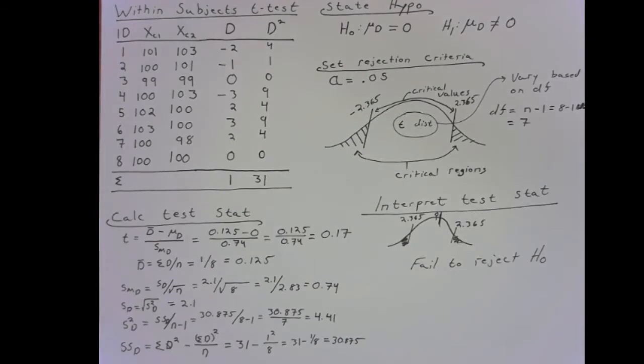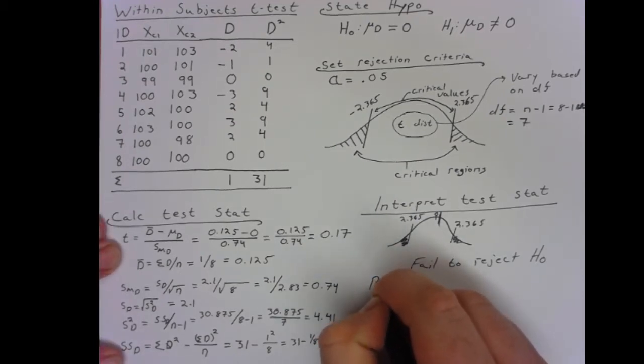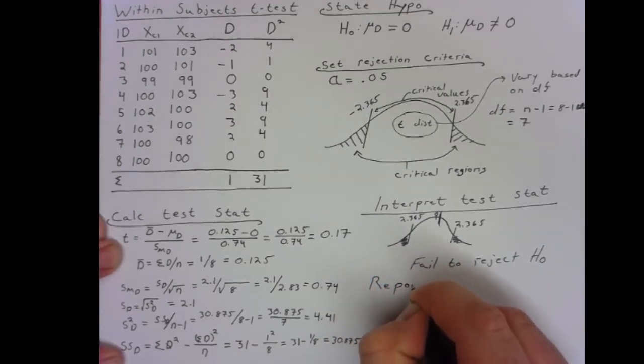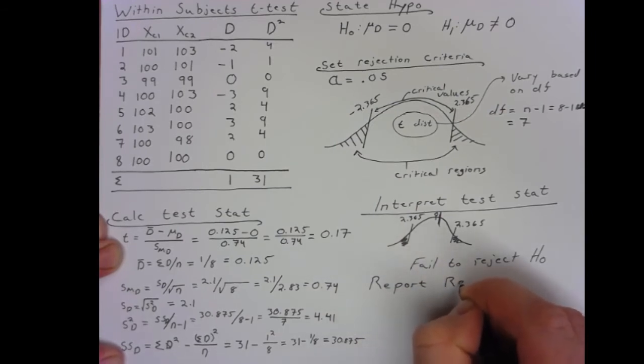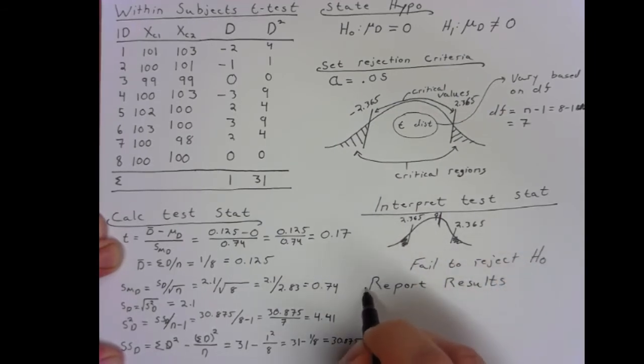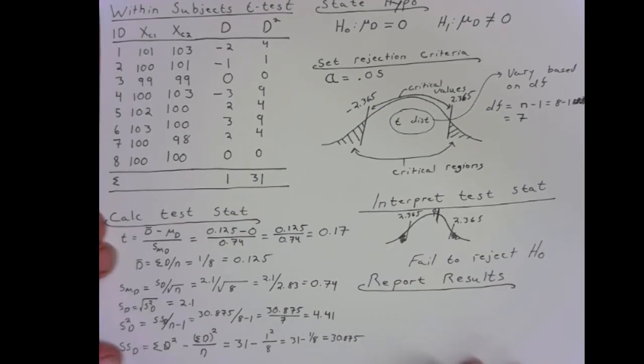One thing you should always do after this point is write up and report your results. Because it doesn't matter if you figured all this out, but you can't tell anyone. And if you tell most people that you failed to reject the null hypothesis in your experiment, they're not going to know what you mean. So, we need to put this in terms that are a little bit more concise and easier to understand. Let's go ahead and report our results. I'm going to report them in APA style, which has sort of this specific way you have to tell everything.